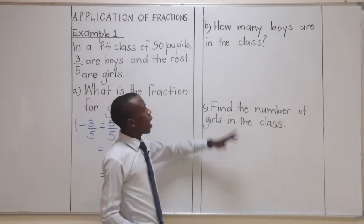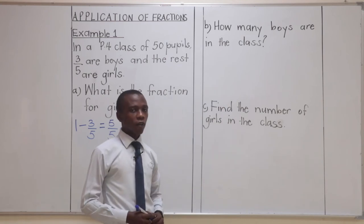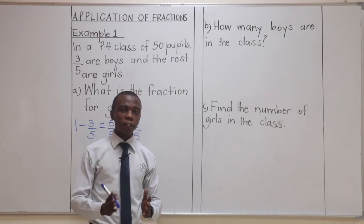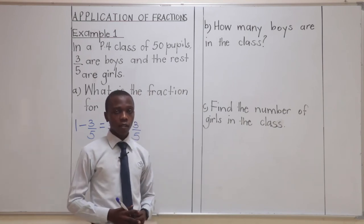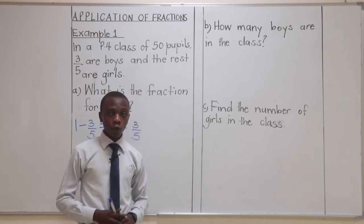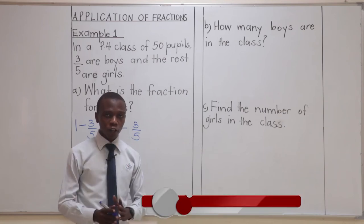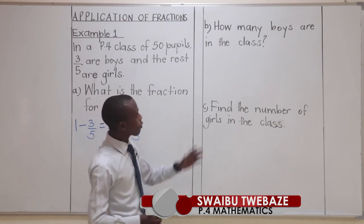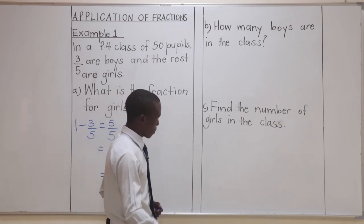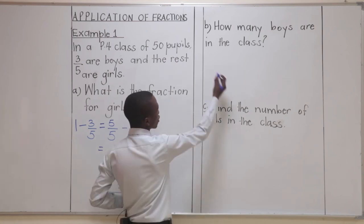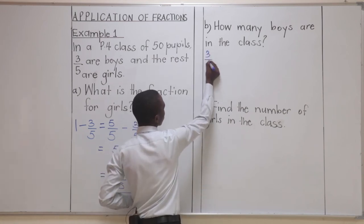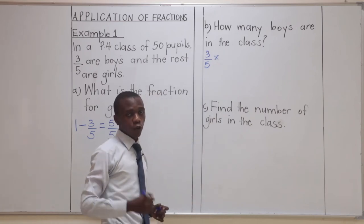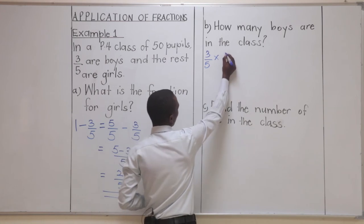Part B says, how many boys are in the class? In the number here, we were given 50 children are in the class, but 3 out of 5 of those are boys. So, we only have a fraction that represents the number of boys. For us here now to get the number of boys, we will simply multiply the fraction, which is 3 out of 5, times the total number of children in class. And the only other number is 50. So, we have 50 here.